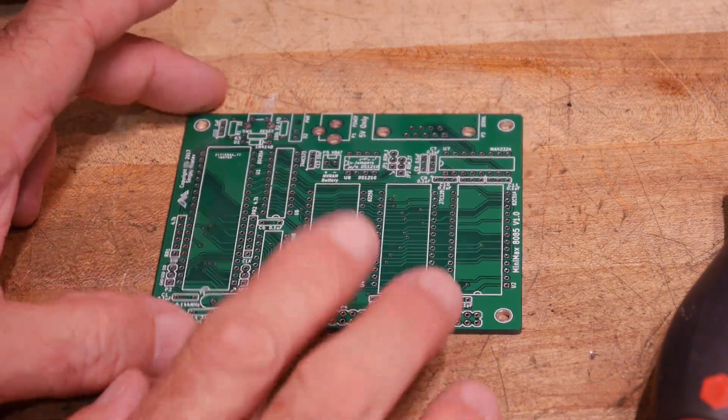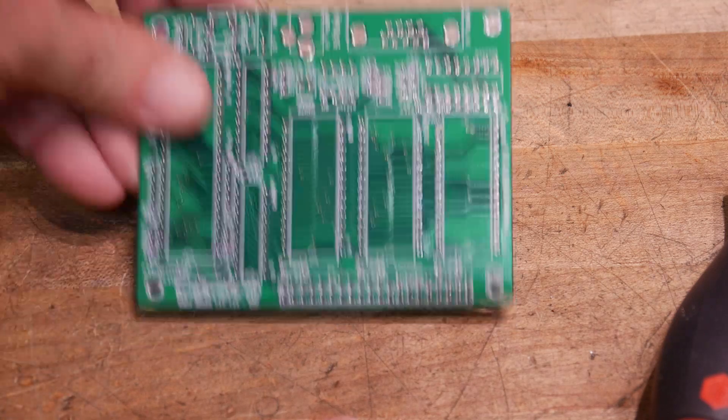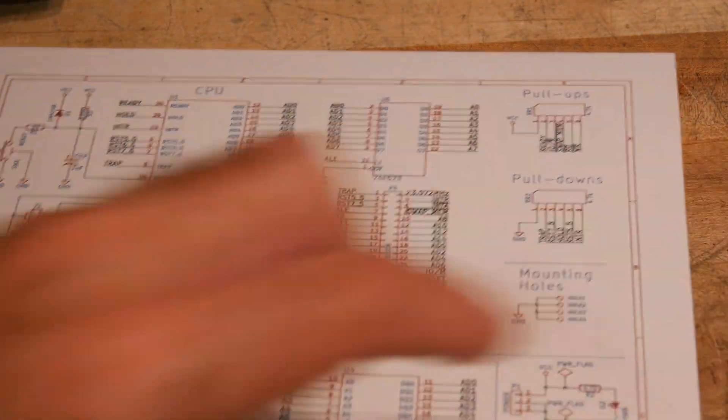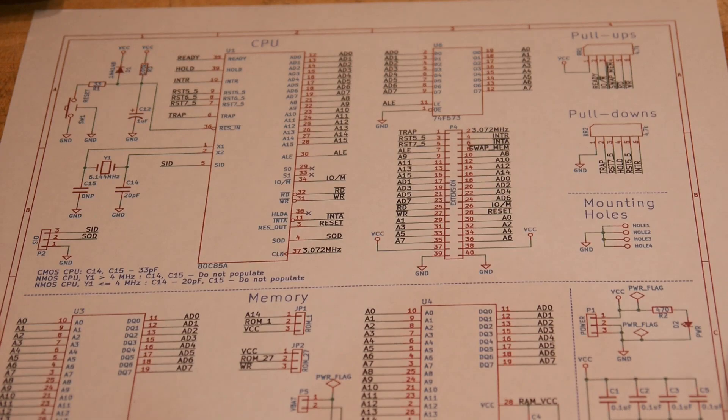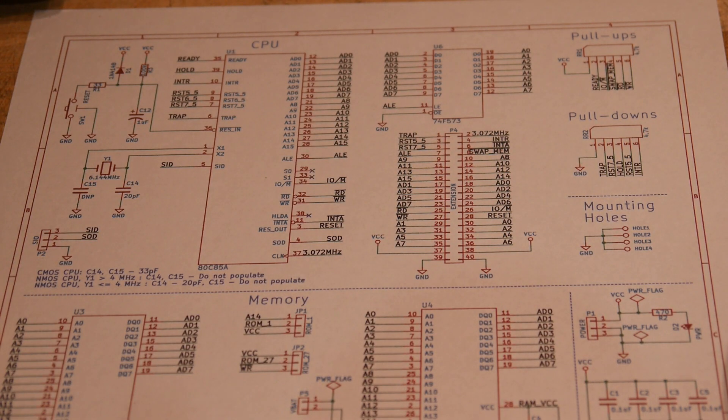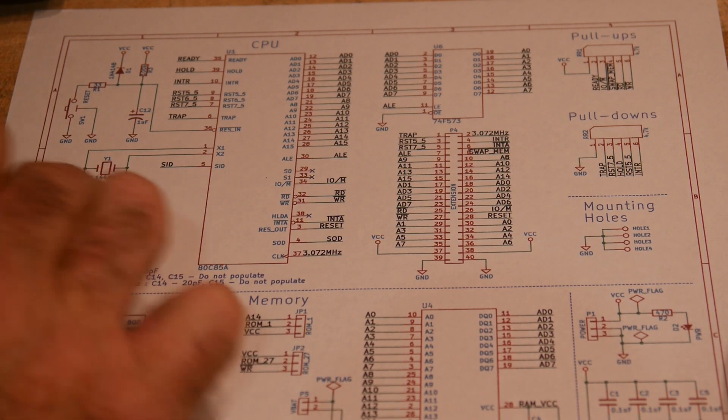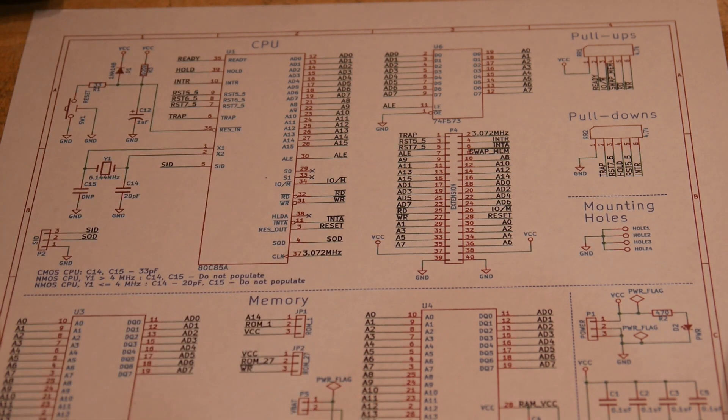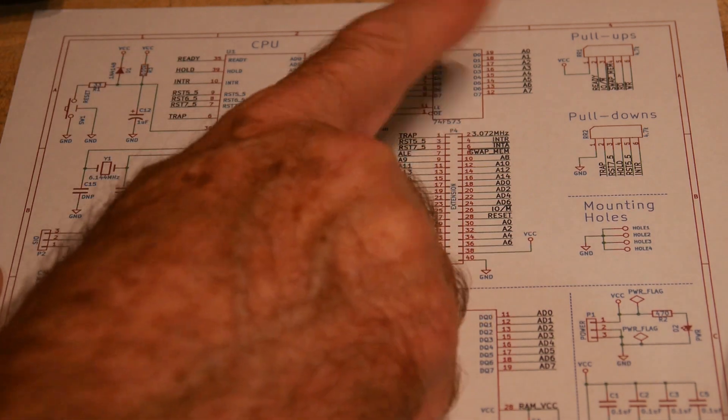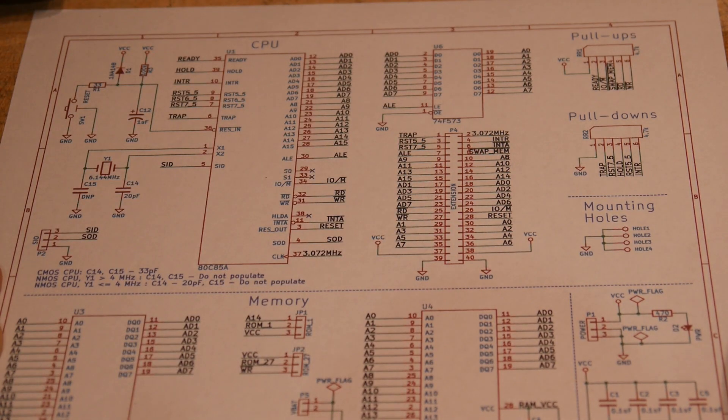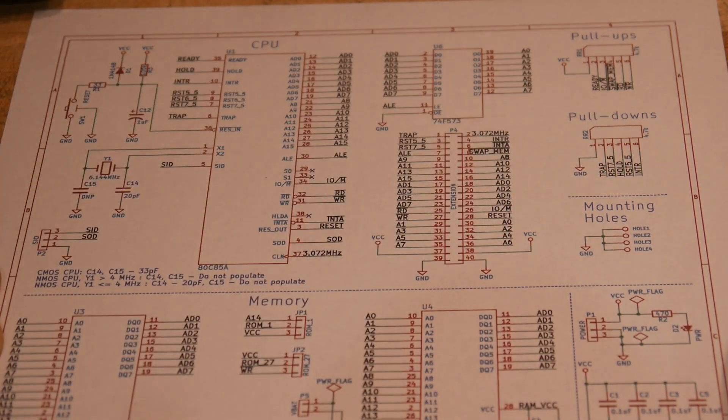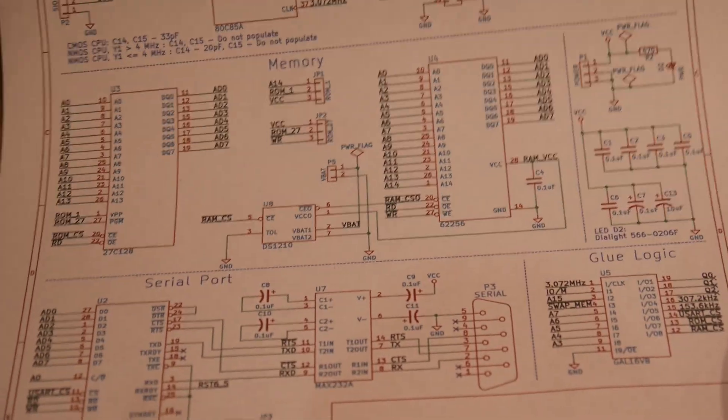So, these came in the mail today. They look pretty nice. Let's have a quick look at the schematic. We have the CPU. It has its own internal crystal oscillator. So, you just have an external crystal. And the load resistors are dependent on what type of material the CPU is made out of. If it's a MOS device or a CMOS device. Standard reset circuit. Here's the demultiplexer for the address lines. There's some pull-ups and pull-downs on little SIP packages.